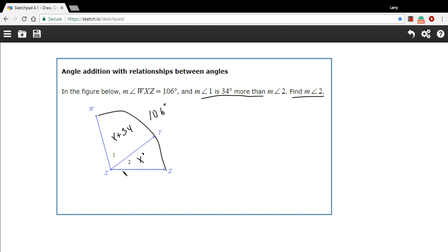Now I can put this all together into an equation, because I know that this angle plus this angle, angle 1 plus angle 2, has to equal 106 degrees. So I can write X plus 34, that's angle 1, plus angle 2, which is just X, equals 106.